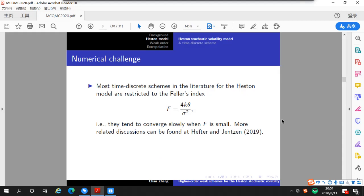Although there are many numerical methods proposed, most time-discrete schemes in the literature for the Heston model are restricted to the Feller index. That is to say, they tend to converge slowly when the Feller index is small. However, in real applications of the Heston model, the Feller index calibrated to financial market data is usually very small.